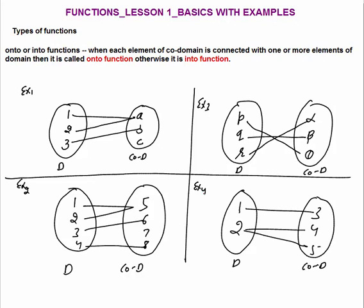We will go through them one by one. First example: you can see that the element C in the co-domain is not connected with any input, so this is an into function. In the second example, the element C in the co-domain is also not connected with any elements in the domain, so this is also an into function. In example 3, each and every element of the co-domain is connected with some element of the domain, so this is an onto function.